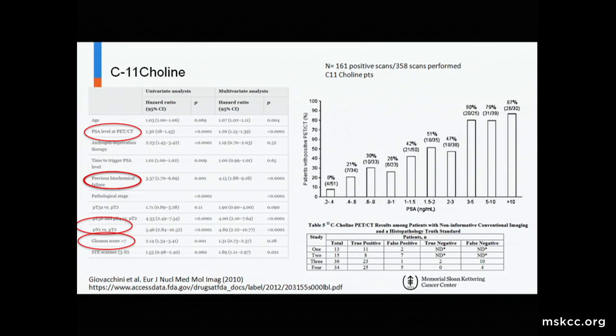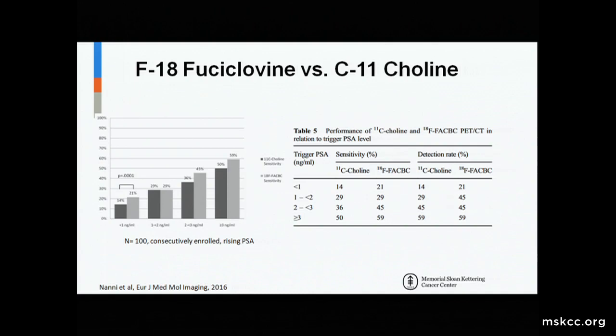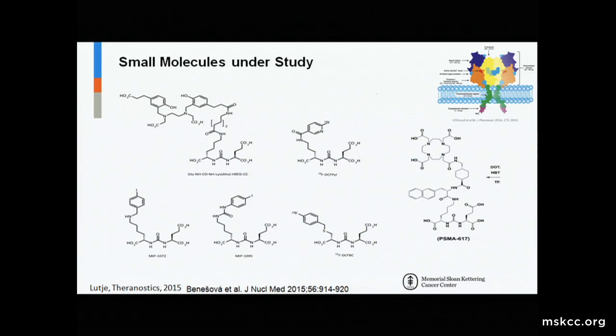There are other factors that play into detection of disease, not just PSA level, but whether this is your first biochemical failure, your original surgical staging, and your Gleason score as well. When you compare fluciclovine and choline head to head, there may be better performance characteristics at the low PSA ranges with fluciclovine or FACBC than with choline. But again, optimal detection is in the 1.5 to 2 PSA range. That brings us to PSMA-based imaging.